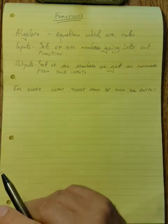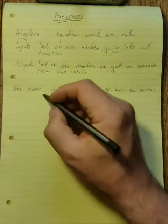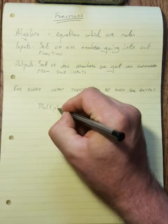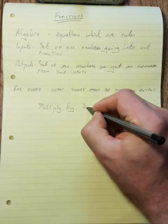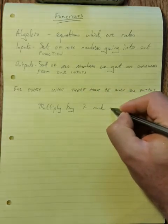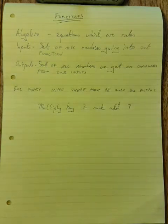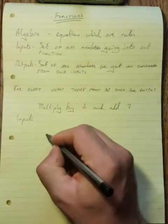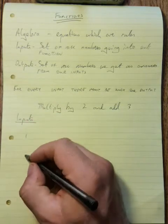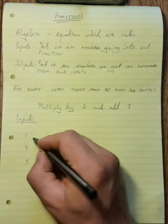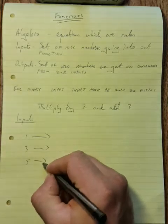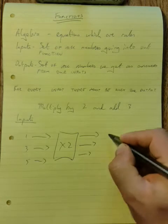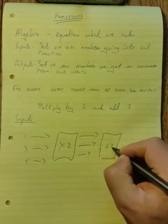Let's look at a simple example of a function. We'll say multiply by 2 and add 3. And I'm going to say that my inputs are the numbers 1, 3, and 5. My first rule is multiply by 2, and then my second rule is add 3.